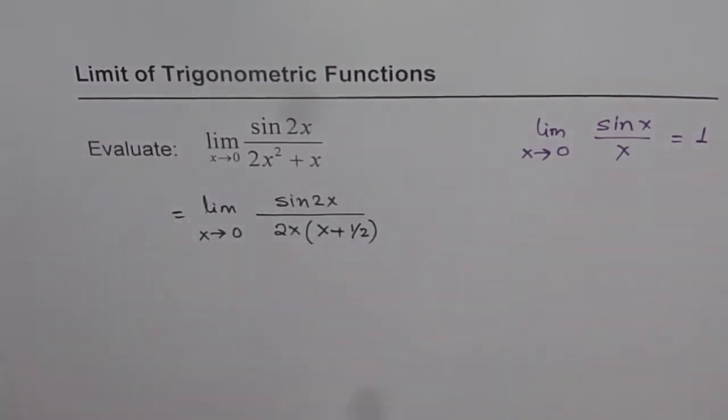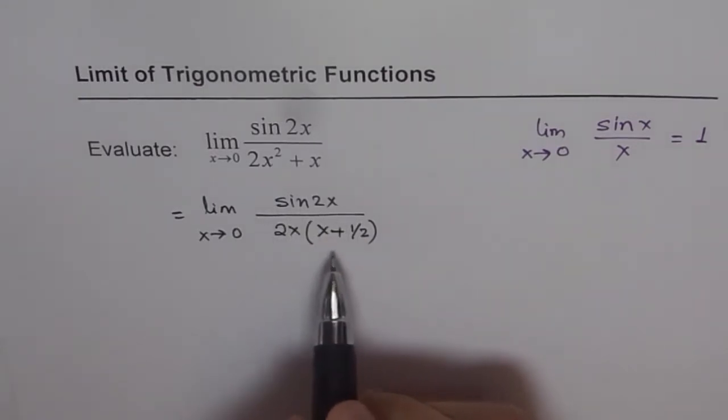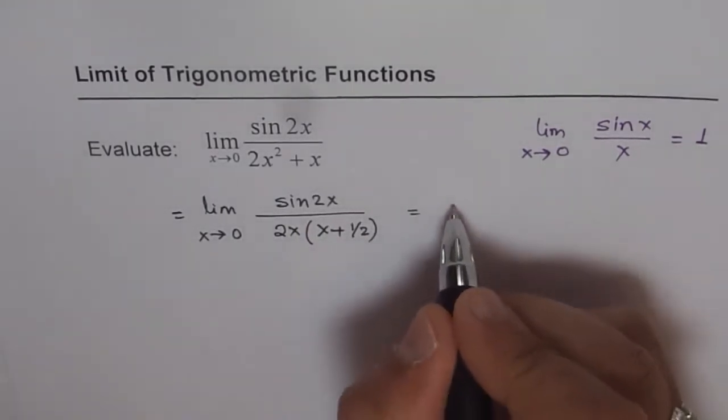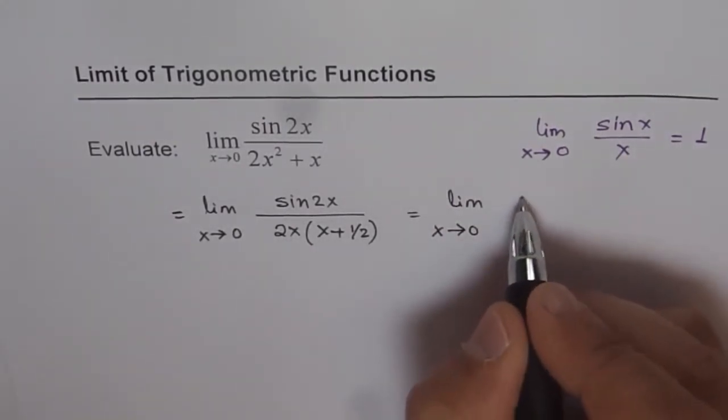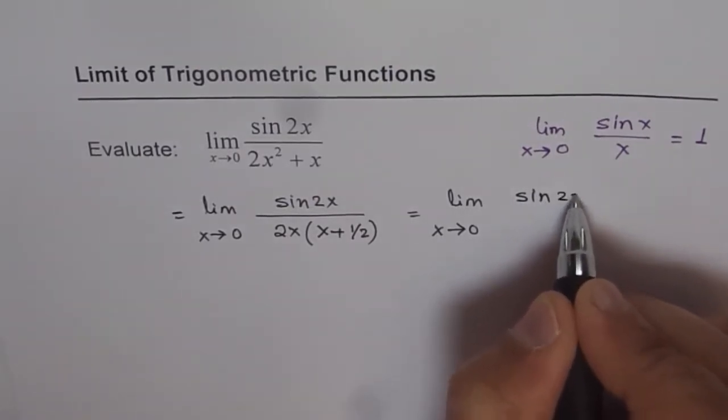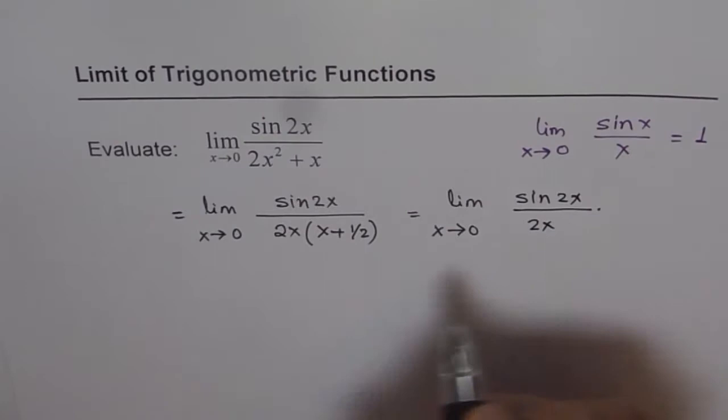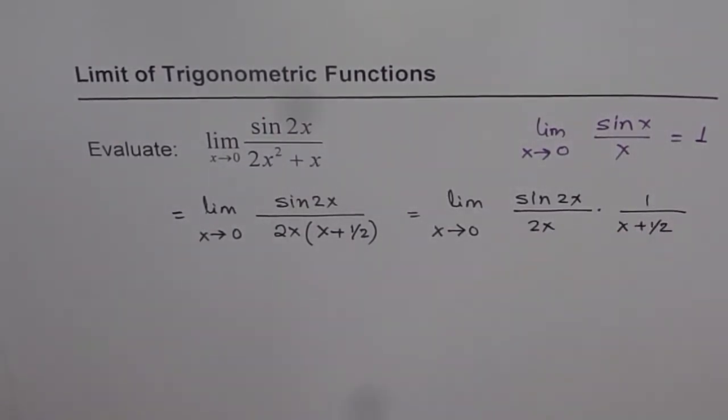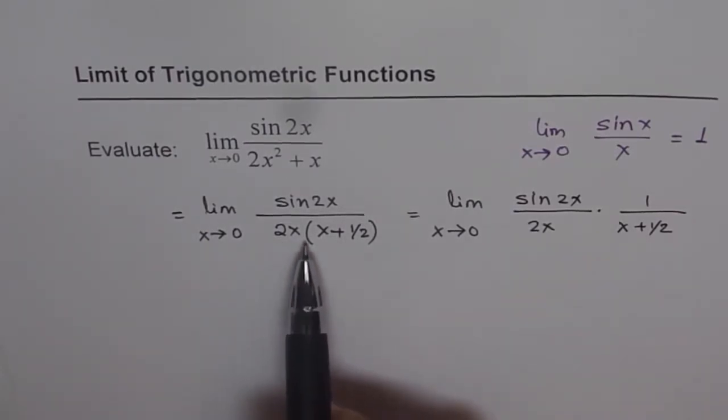x plus 1/2, that is what I get. Now it is necessary to factor out 2x since I can write this in a different way - as limit x approaching 0 of the product: sin(2x) over 2x times 1 over (x + 1/2). That is the advantage of factoring 2x in this case.